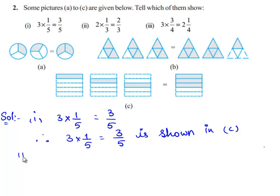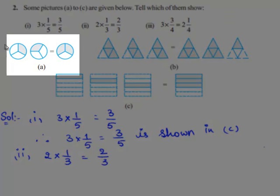So now let us consider the next fraction, that is 2 times 1 by 3, which is equal to 2 by 3. We observe the drawing in A. We observe 2 circles which are divided into 3 parts each. In the first circle, out of the 3 parts, one part is shaded. And even in the second circle, out of the 3 parts, one part is shaded.